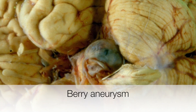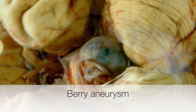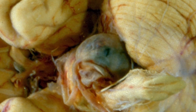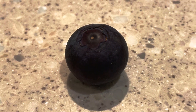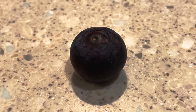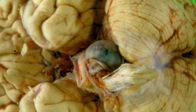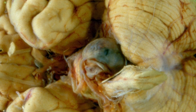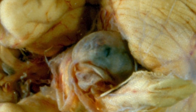The lesion at the base of the brain is a berry aneurysm. This one has a striking resemblance to a blueberry. Berry aneurysms occur in the circle of Willis, at the base of the brain, and are a major cause of subarachnoid haemorrhage.